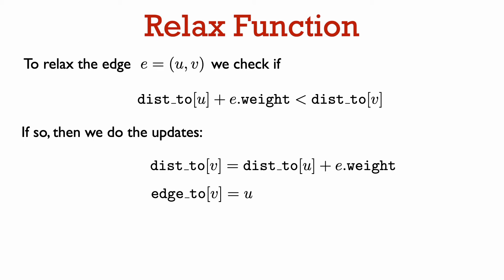Here is a reminder of what the relax function does. To relax the edge e from u to v, we check if dist2 of u plus the edge weight of e is less than dist2 of v, the length of the current best path we have found from zero to v. If it is, then we update dist2 and edge2 to indicate that we have found a shorter path to v that goes through u before arriving at v.